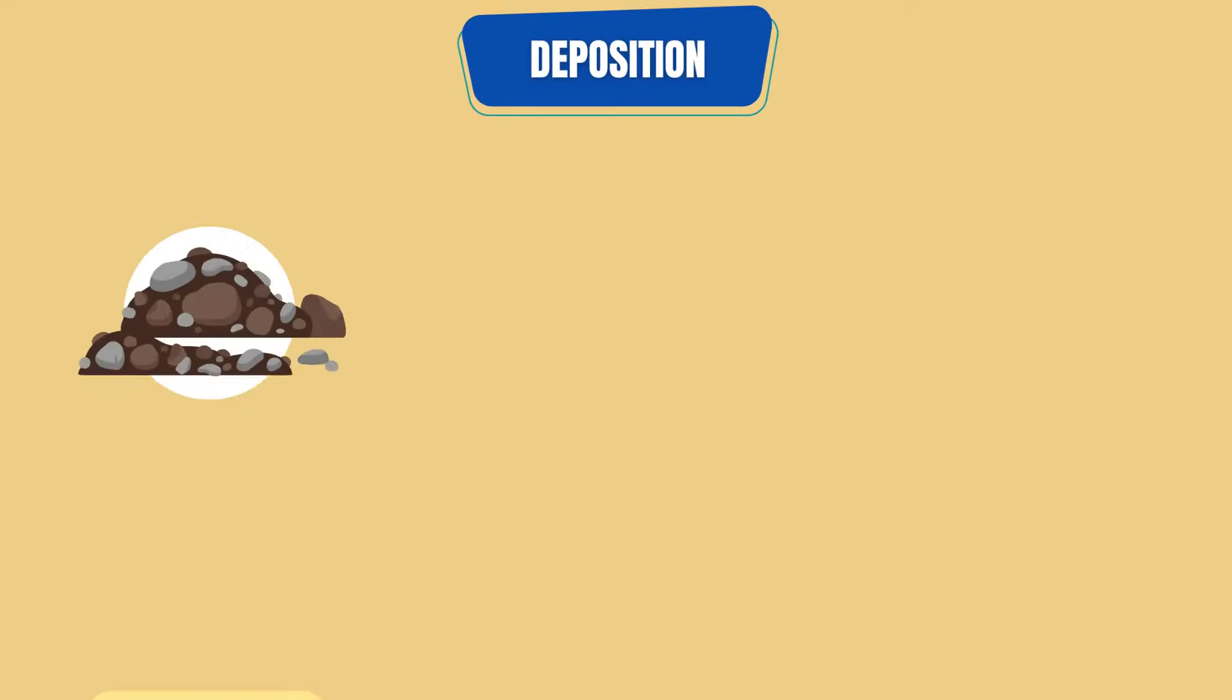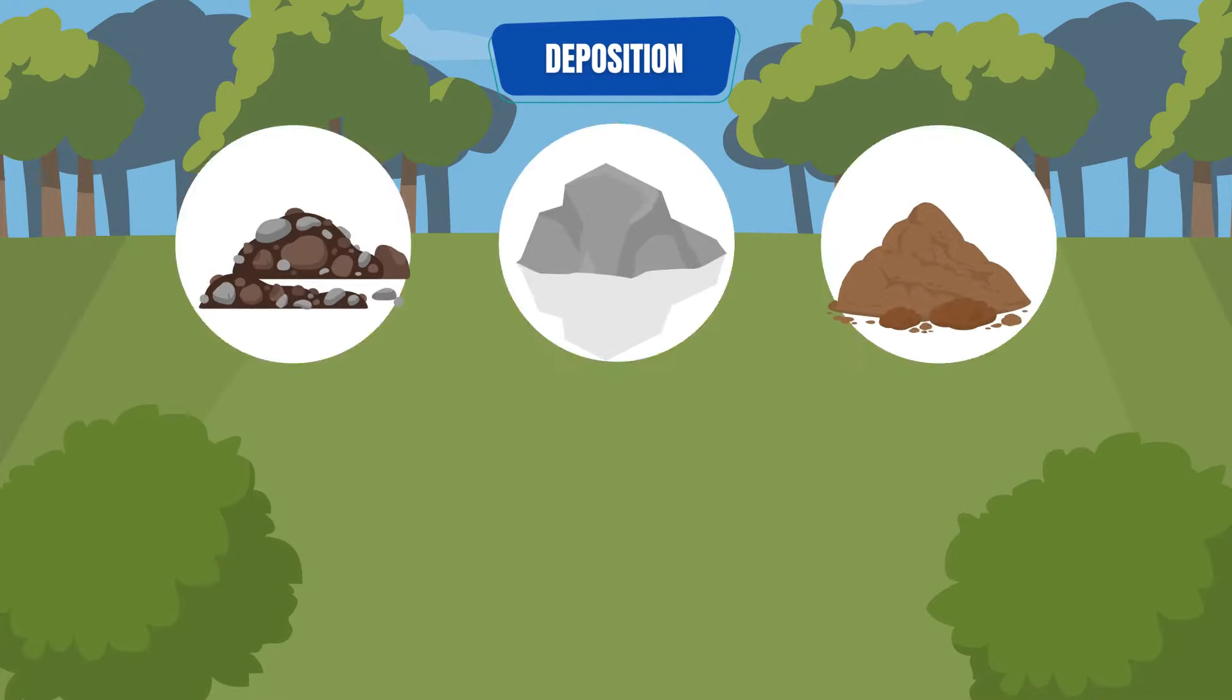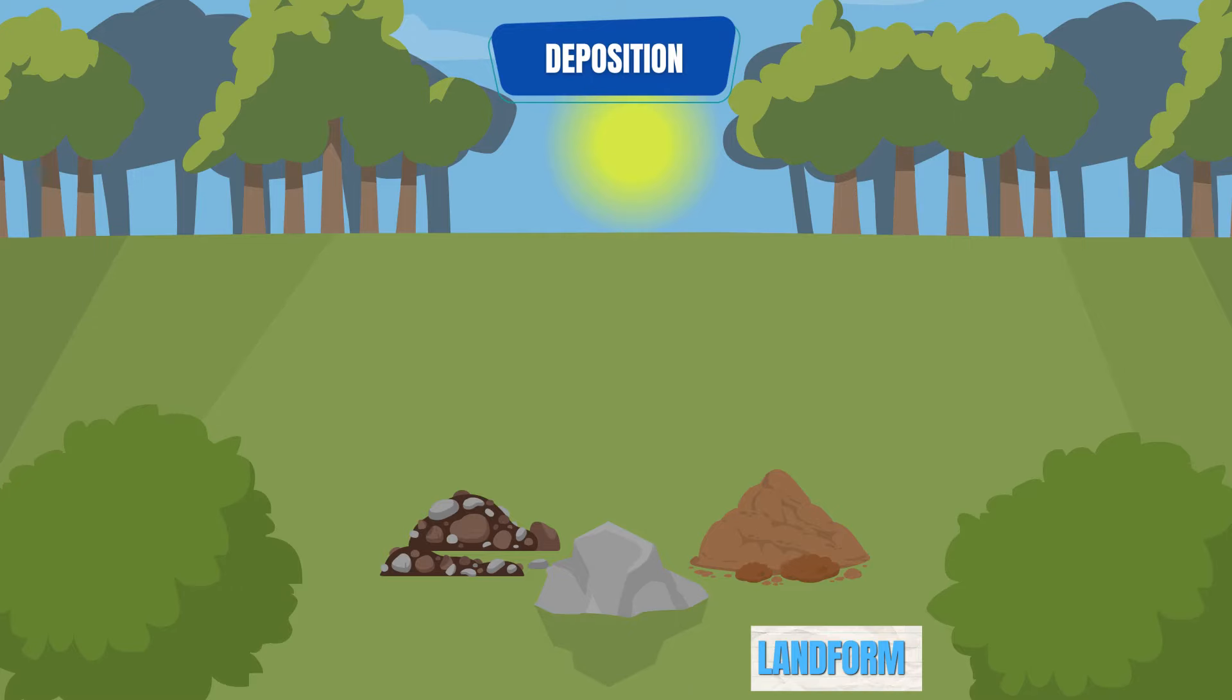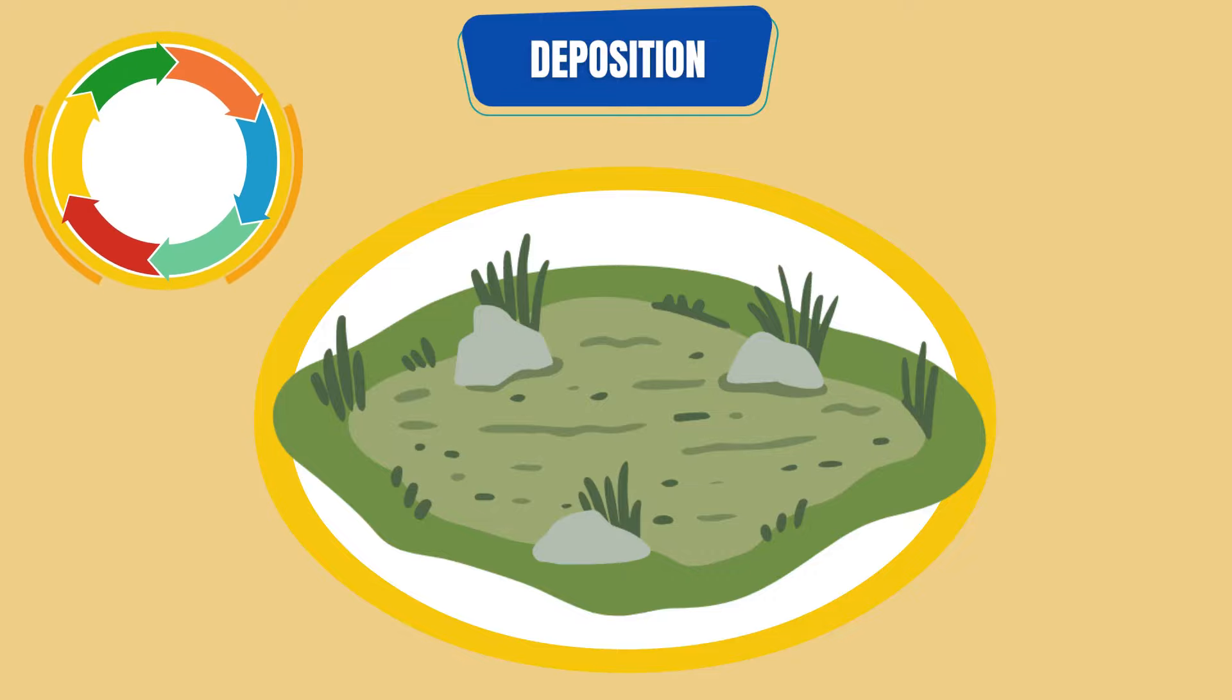Deposition is a geological process in which sediment, soil, and rocks are added to a landform or landmass. Once the material has been eroded and is no longer being moved, it is deposited in a new location. The cycle then starts again with a fresh rock that is exposed.